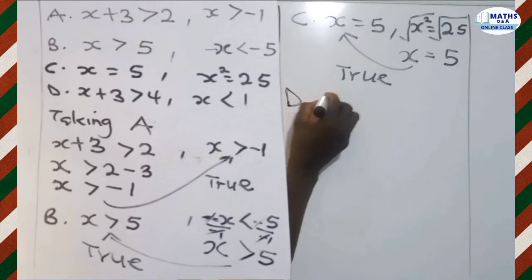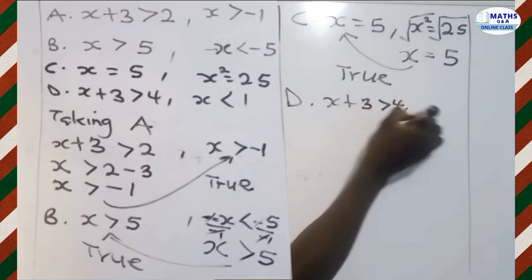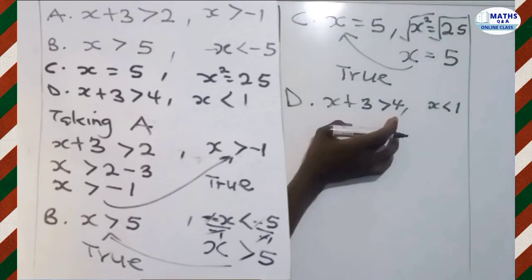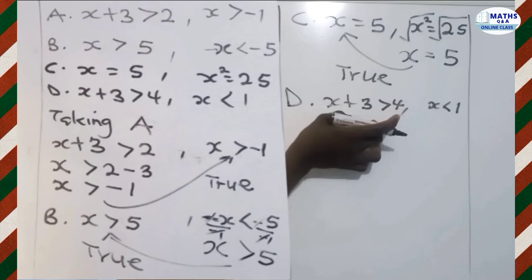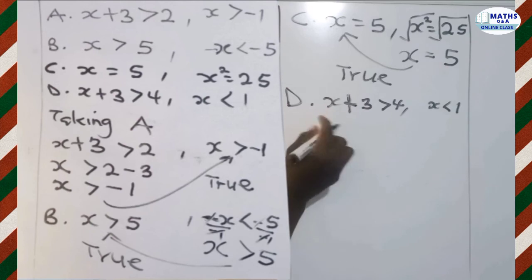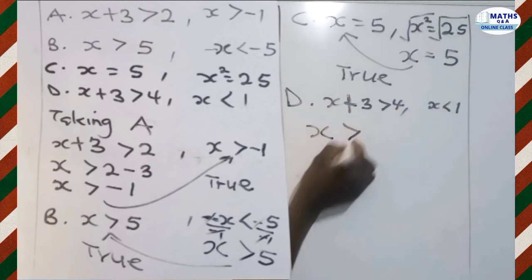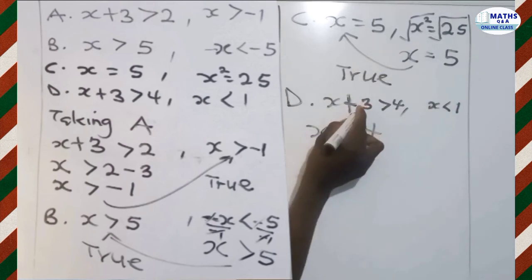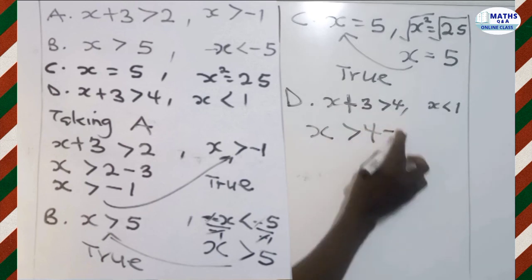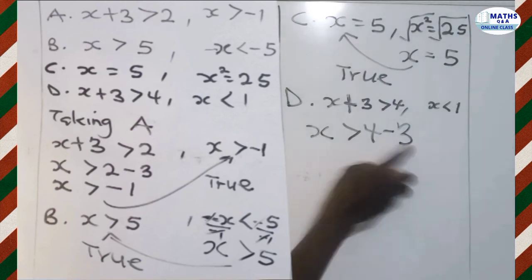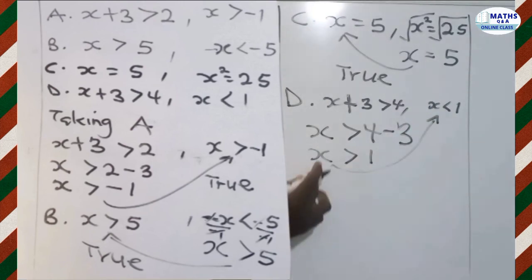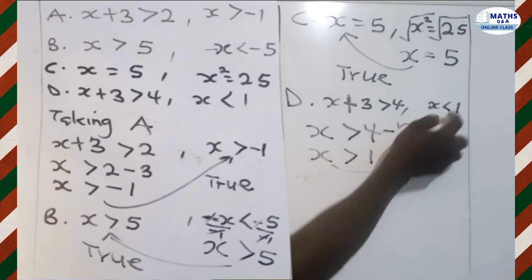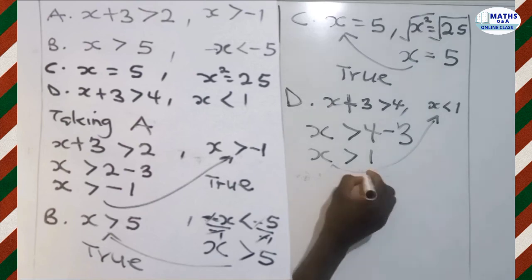Option D: we are given that X plus 3 is greater than 4, where X is less than 1. We solve by making X the subject — we group like terms, write X with the inequality sign, and send 3 to the other side. Since 3 is positive, it becomes negative 3. So X is greater than 4 minus 3, which gives X greater than 1. Comparing: our result is X greater than 1, but the statement given says X is less than 1. These are contradictory, so this statement is false.